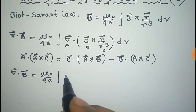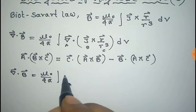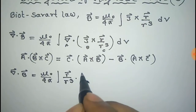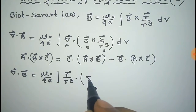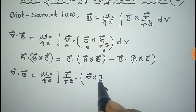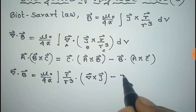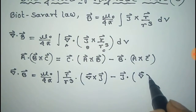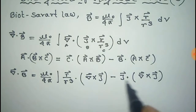This is c vector, that is r vector by r cube. So it will be: r vector by r cube dot a cross b — that is curl of j — minus b, that is j vector, dot del cross r vector by r cube into dV.